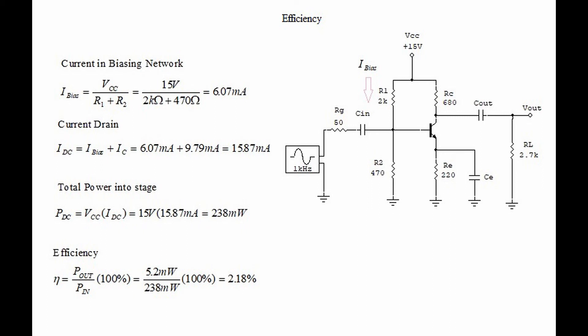The total power into the stage is called power DC and it equals VCC times IDC which in this case is 238 milliwatts.